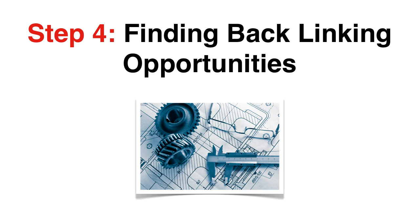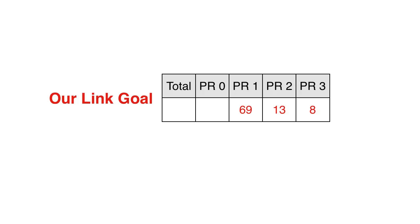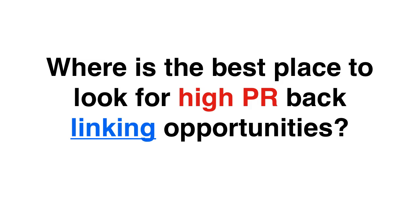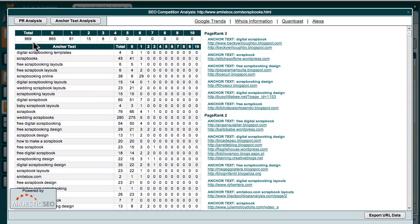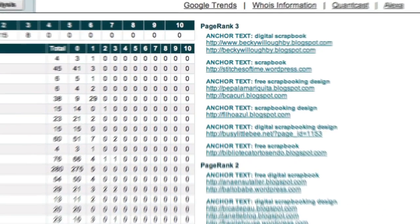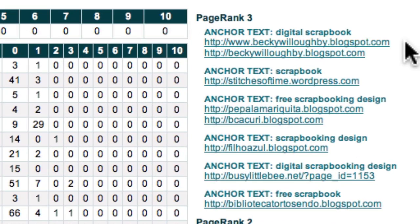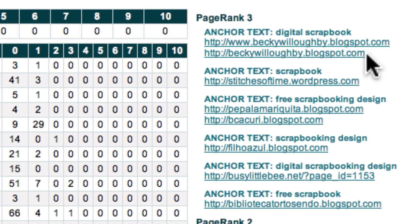Step 4: Finding backlinking opportunities. Now that you have a definite goal to work towards, you can begin to look for opportunities to obtain high page rank backlinks. One of the best places to start is by finding out exactly where your competitors got their high PR backlinks from. Here is the link network snapshot of the site currently in eighth spot. Over here, I can see that our competitor obtained a PR3 link from a number of sites hosted at blogspot.com, which suggests that they are personal blogs. So let's click on one of these links to investigate.